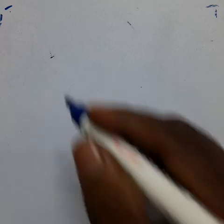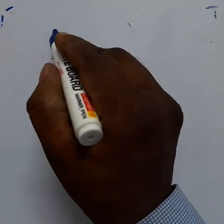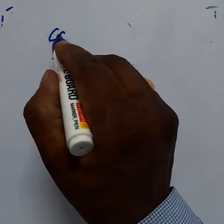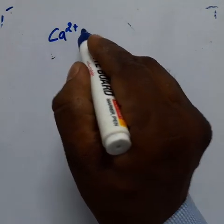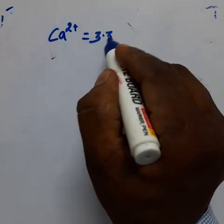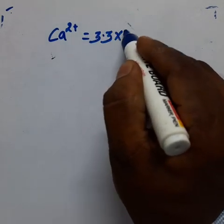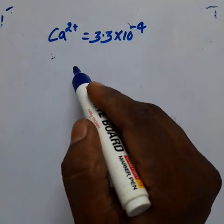So, what is given: the concentration of calcium ion is equal to 3.3 into 10 raised to minus 4 M. Ksp is the question mark — that is what we need to find.